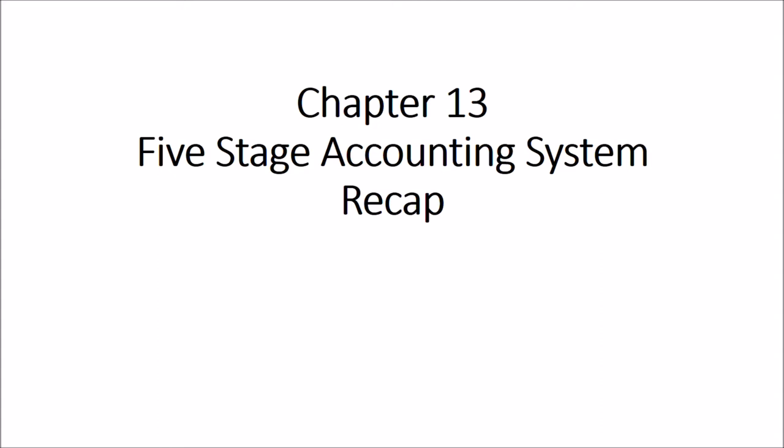In this chapter we're going to recap all the source documents, day books and ledgers, and go through the flow of accountancy actions. In chapters 13 to 18 we're really just going to improve our exam technique. The flow of information through an accounting system is termed the five-stage accounting system. These five stages are really classifications of actions, documents, and records into five categories, rather than stages in a strictly linear process — information will go back and forth through the five stages.